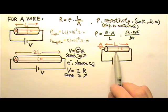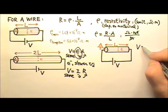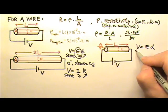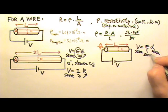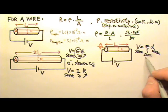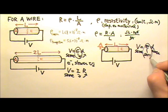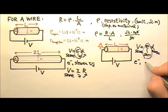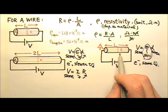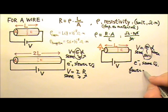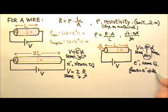The two wires have the same length. By V equals ED, they have the same voltage, same length, same D, which means the electric field must also be the same. The same electric field means the electrons would have the same drift speed. But the thinner wire has fewer free electrons at a cross-section.